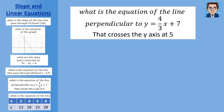Problem five: find the equation of a line perpendicular to y equals 4 thirds x plus 7 that crosses the y-axis at 5. The slope of the perpendicular line is the negative reciprocal of 4 thirds — flip it to 3 fourths and make it negative, giving negative 3 fourths. It crosses the y-axis at 5, so the y-intercept is 5. Our equation is y equals negative 3 fourths x plus 5.